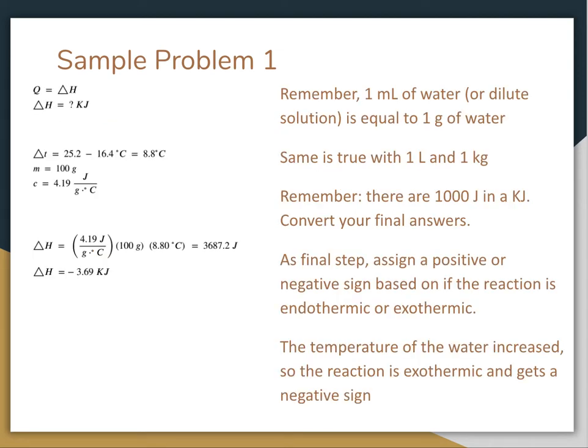What we will see is that we know that Q is going to equal ΔH. So we're looking for a number of kilojoules. The change in the temperature was 8.8°C. The mass of the water, because the water is changing temperature, is 100 grams.